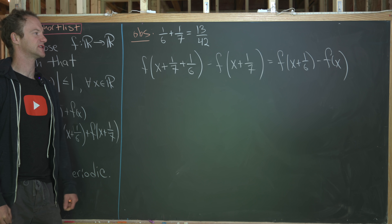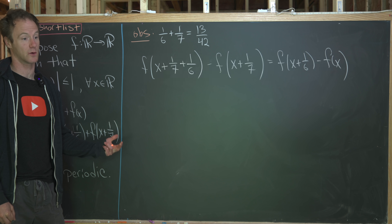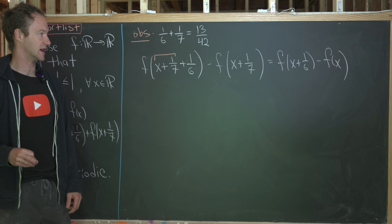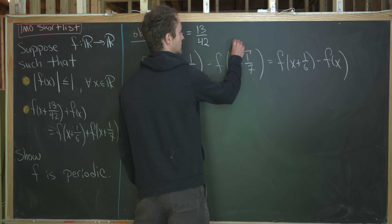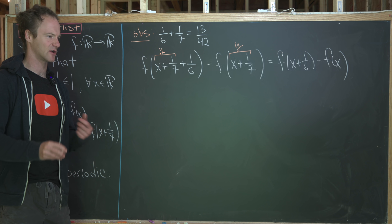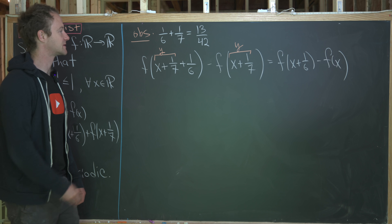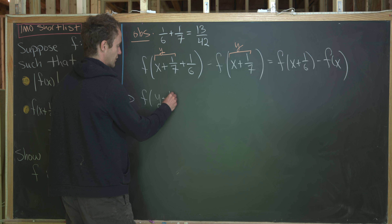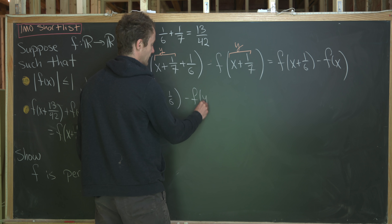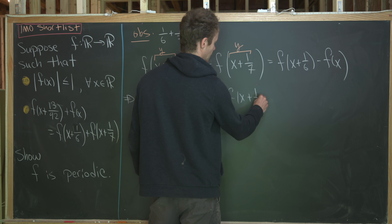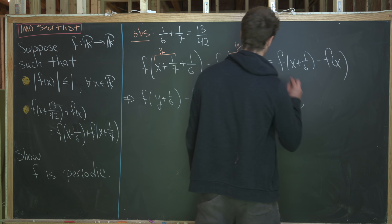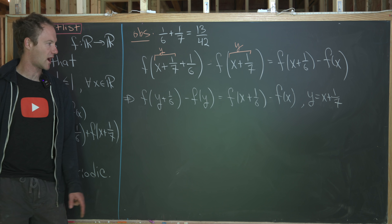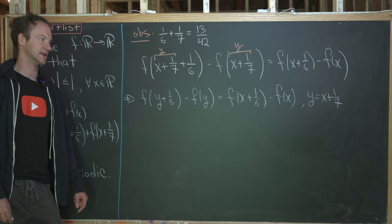Now I'll introduce a bit of notation — not essential, but it makes things simpler. I'm going to group x + 1/7 into a y. This just cuts down on how much we need to write. That allows us to rewrite the equation as f(y + 1/6) − f(y) = f(x + 1/6) − f(x), where y = x + 1/7. It's important to keep that relationship — y is not a free variable.